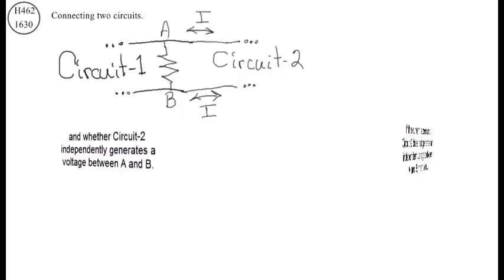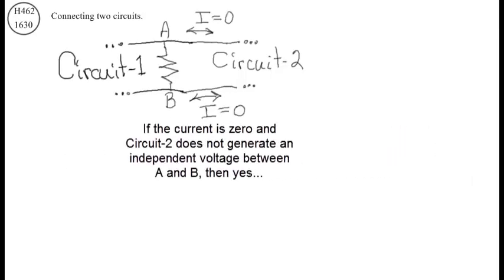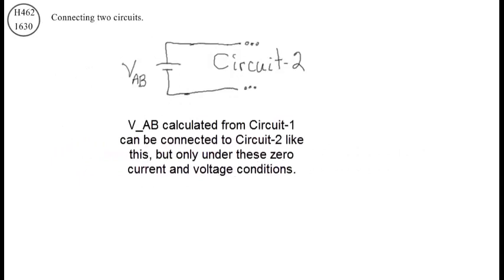If the current is zero, and circuit two does not generate an independent voltage between A and B, then yes. VAB, calculated from circuit one, can be connected to circuit two like this, but only under these zero current and voltage conditions.